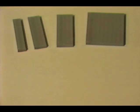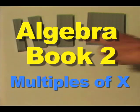In book two, we are no longer allowed to use individual x's. In book two, we must use multiples of x.